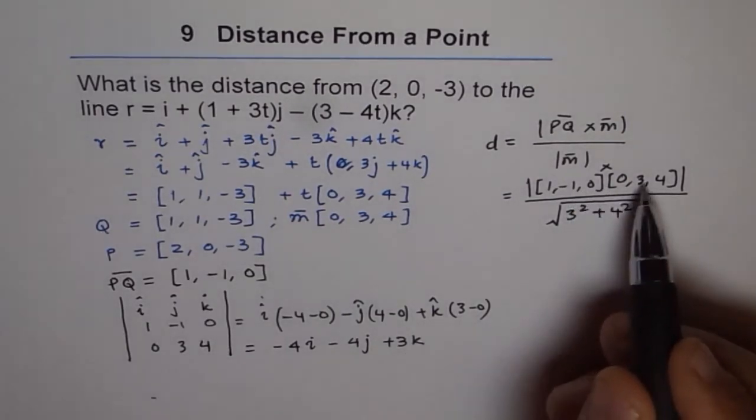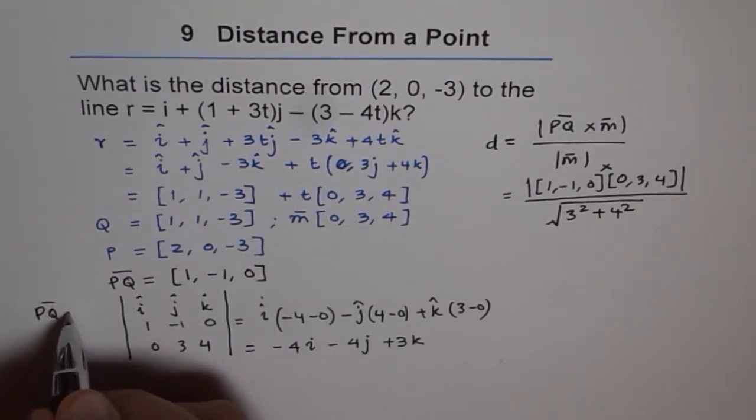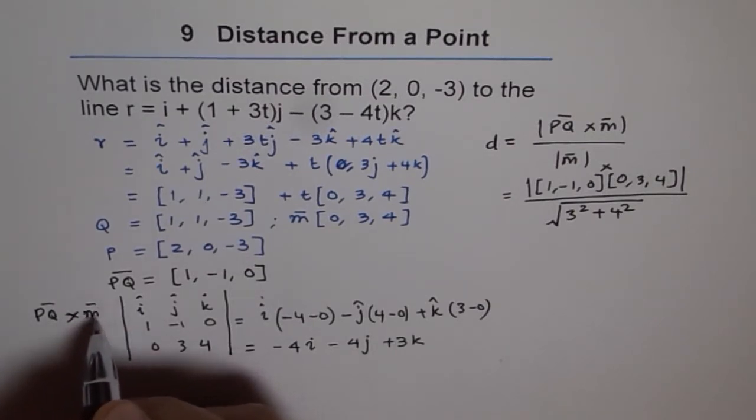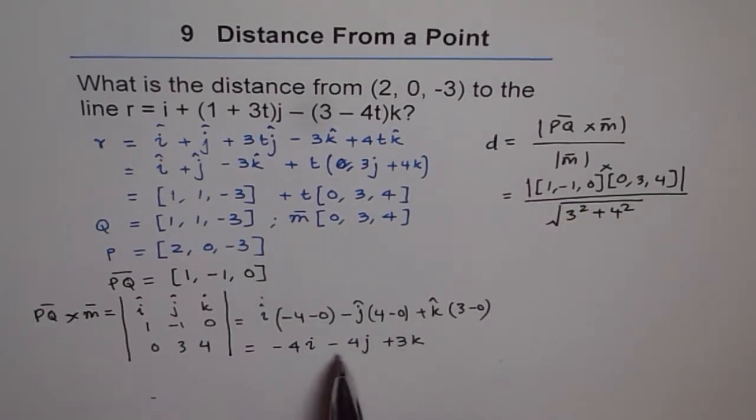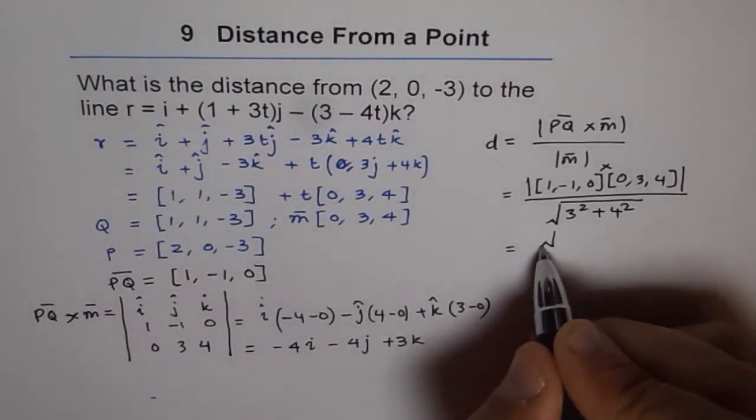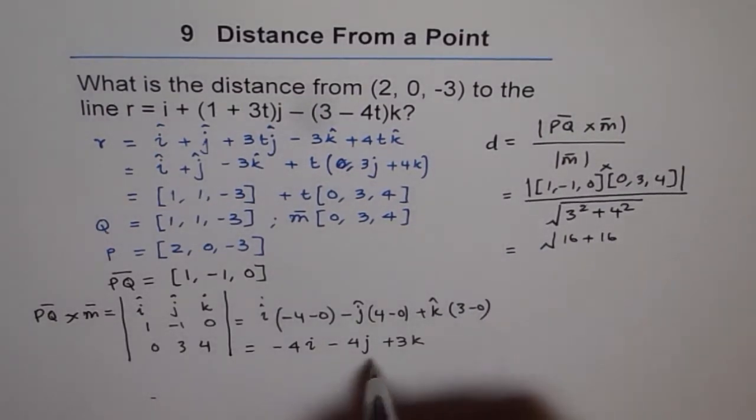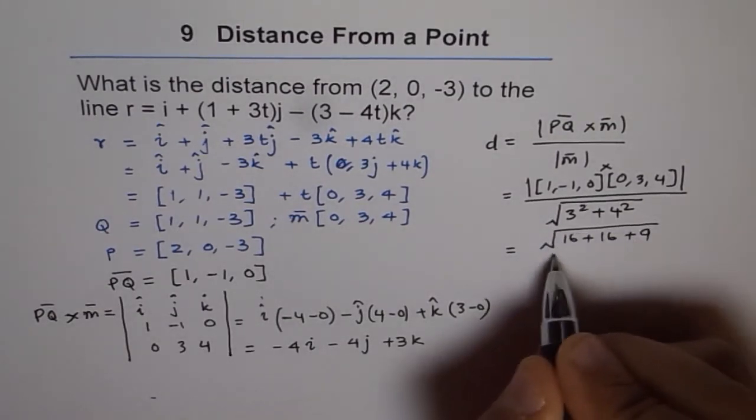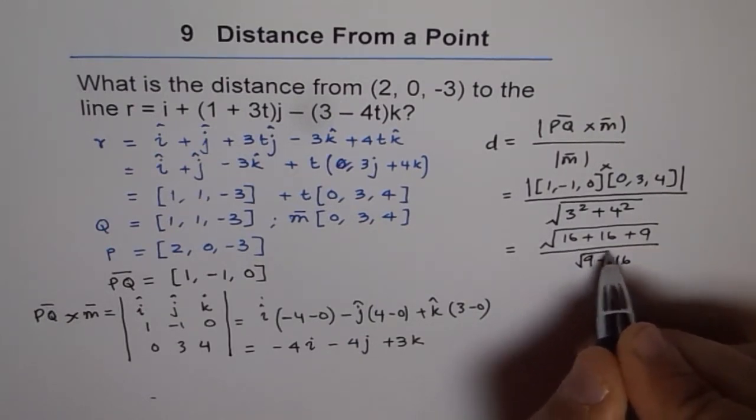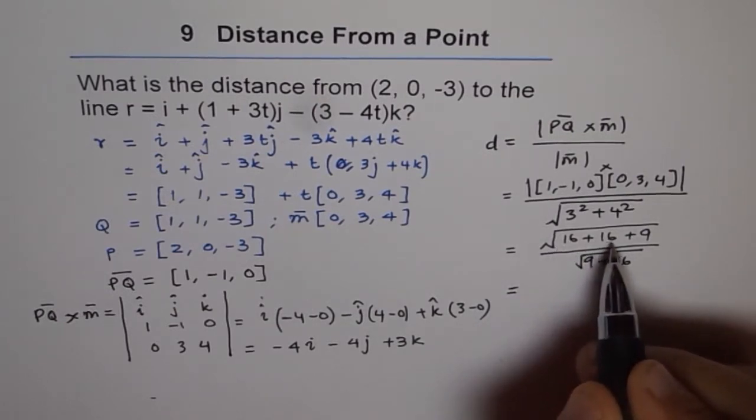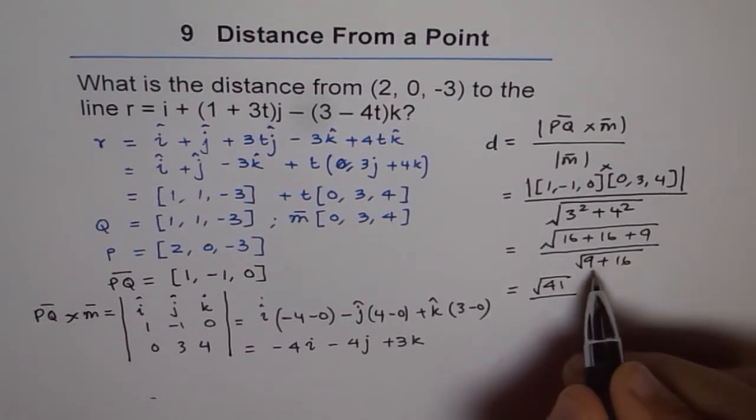Now here we need magnitude of this. So magnitude of this will be a² + b² + c². So which is equal to square root of (-4)² which is 16, plus (-4)² which is 16, plus 3² which is 9, over, we already have this as 9 + 16. 9 + 16 square root, which could be written as 16 + 16 = 32, 32 + 9 = 41 square root. And here we have 9 + 16 = 25, and square root of 25 is 5. So the distance between the point and the line is √41/5 units.